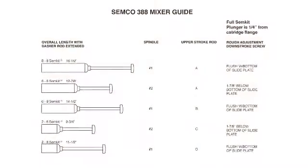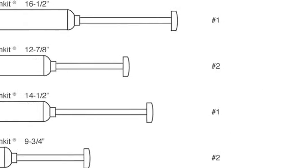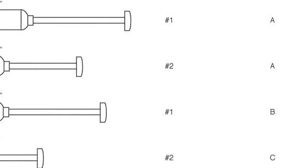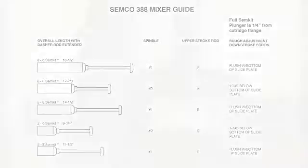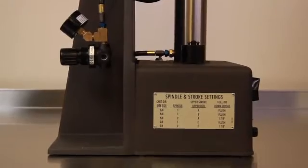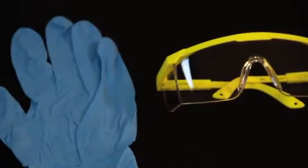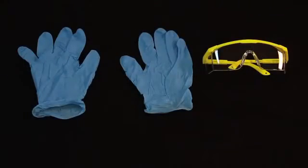Along with the purchase of your SEMCO 388 mixer is an operator's manual that references the guide on screen. Review this guide and identify the corresponding spindle and upper stroke rod for your SEM kit. This chart can also be found on the left side of the SEMCO 388 mixer. In preparing for your application, observe the necessary personal protection equipment measures such as safety glasses and gloves.